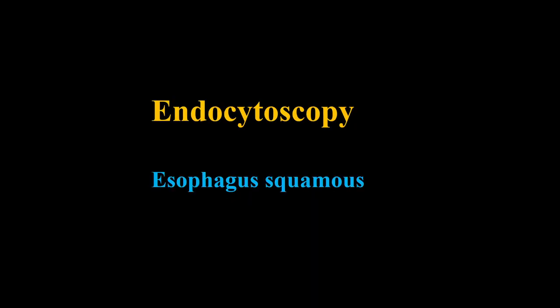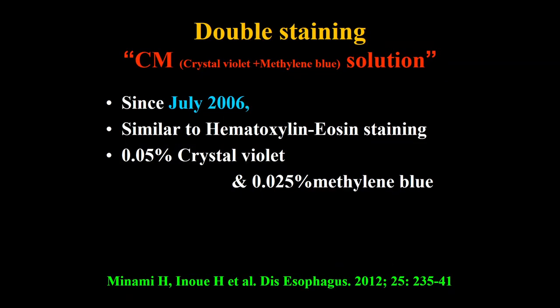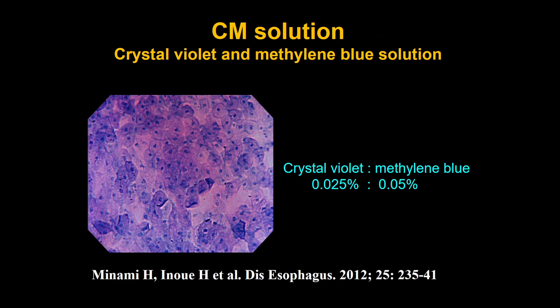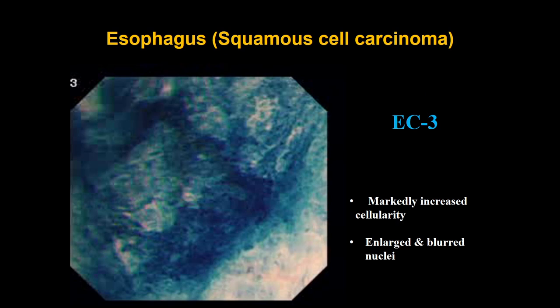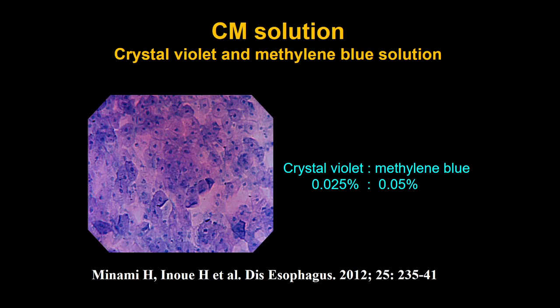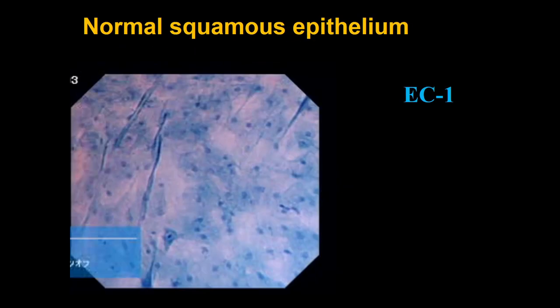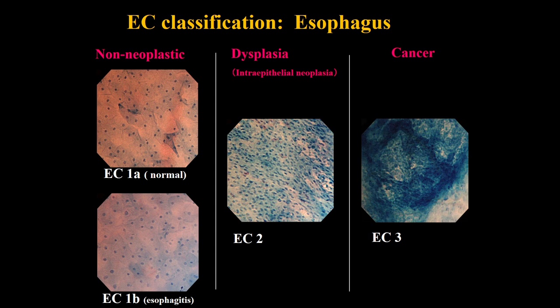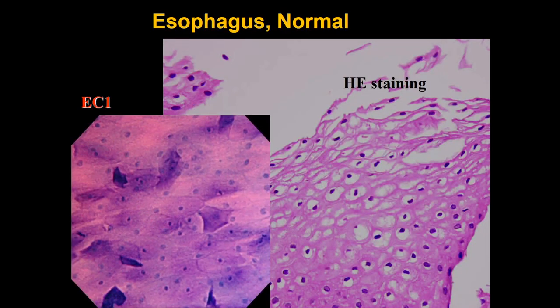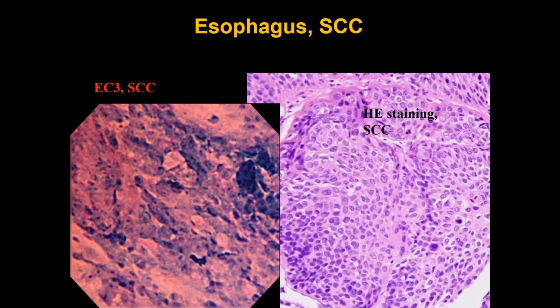I would like to briefly introduce the endocytoscope. Using double crystal violet and methylene blue double staining, we can obtain this kind of image. During endoscopic examination, we can see a nucleus, cell body, and the nucleus. We can simply classify non-neoplastic, dysplasia, and cancer according to particular changes of the nucleus — in normal tissue, compact nuclei with rich cytoplasm; in squamous cell carcinoma, enlarged nuclei can be observed.